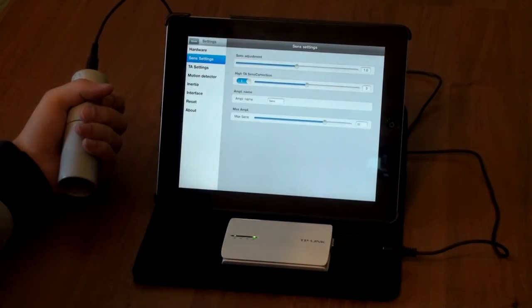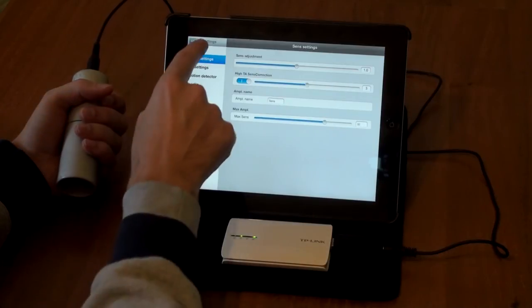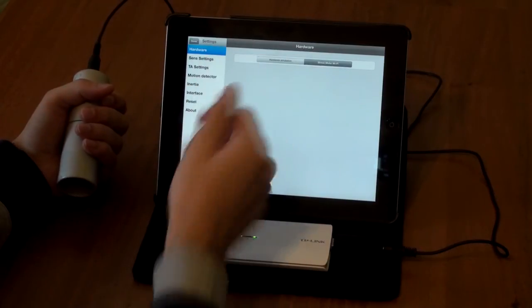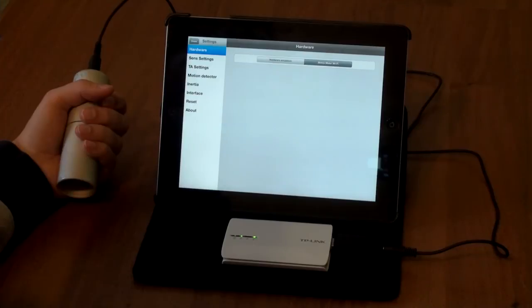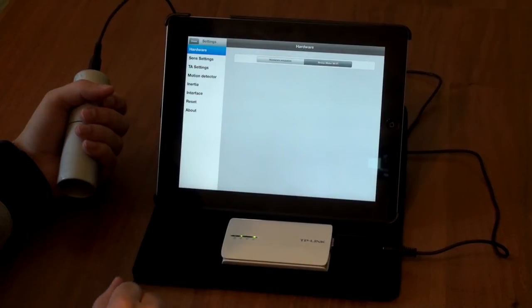Here is sense settings. The most interesting here is high TA sensitivity correction. Sensitivity of this program is working like at quantum. The more TA is, the higher is sensitivity. This is hardware emulation and stress meter Wi-Fi.